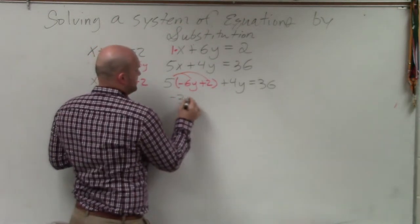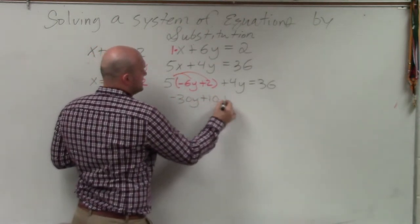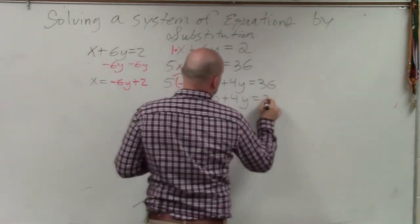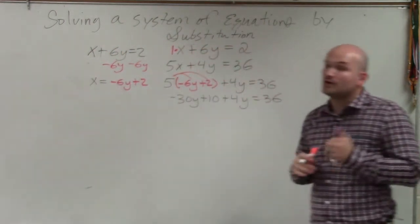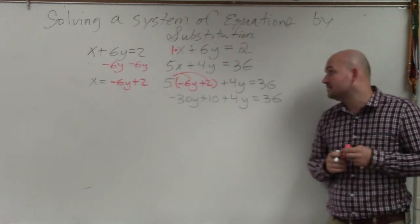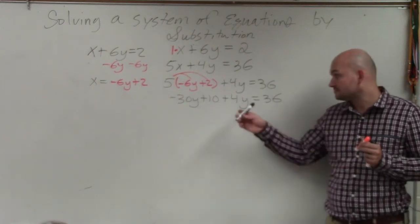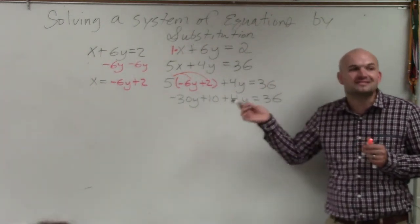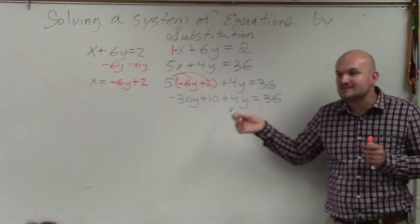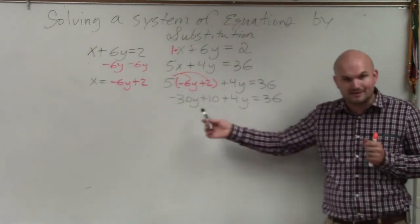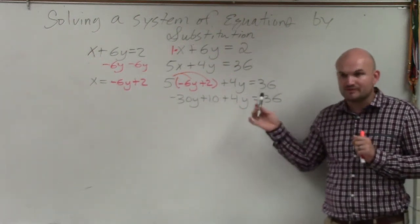So therefore, this becomes a negative 30y plus 10 plus 4y equals 36. Another very important mistake students make: I have two variables on the same side. When they're on the same side, ladies and gentlemen, you can just combine them. You don't need to do properties of equality.